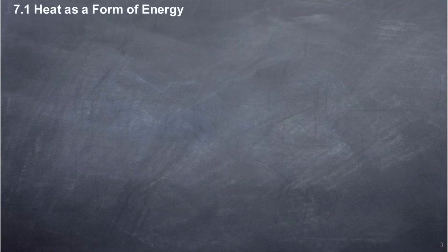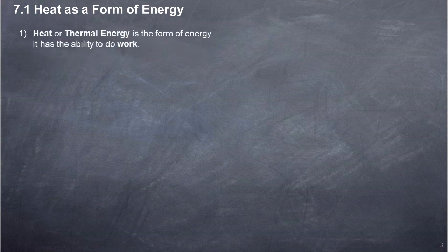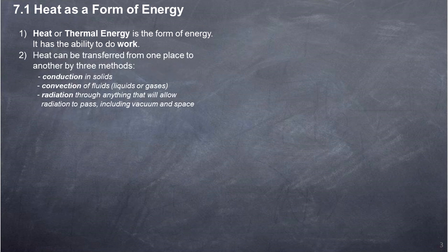7.1 Heat as a form of energy. Heat, or thermal energy, is the form of energy. It has the ability to do work. Heat can be transferred from one place to another by three methods: conduction in solids, convection of fluids (liquids or gases), and radiation through anything that will allow radiation to pass, including vacuum and space.